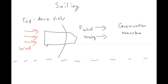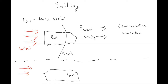Where fluid dynamics can come into play is if we have a boat trying to go the opposite direction. So this is a boat, and this is the sail. If we have a boat trying to go the other way and the wind is in the same direction, if we were only relying on conservation of momentum, then the boat couldn't go into the wind — the sail would fill up and make you go backwards.